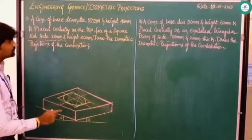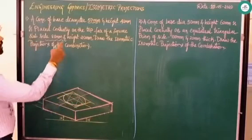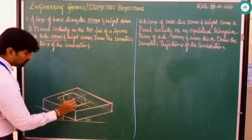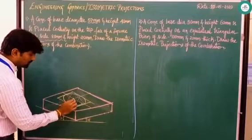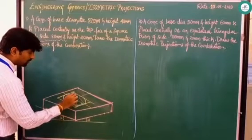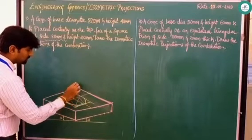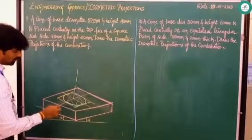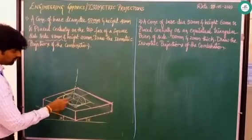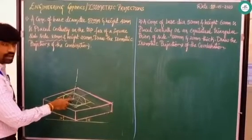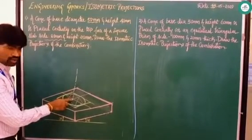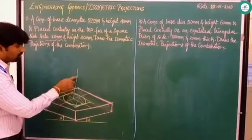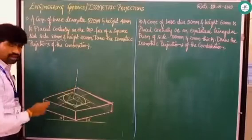After drawing the ellipse, the height is clearly given as 40 mm. From the center, raise the axis height for 40 mm. You can count 10, 20, 30, 40 here to measure this.